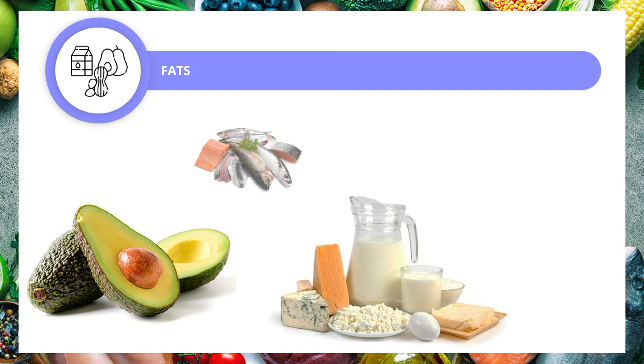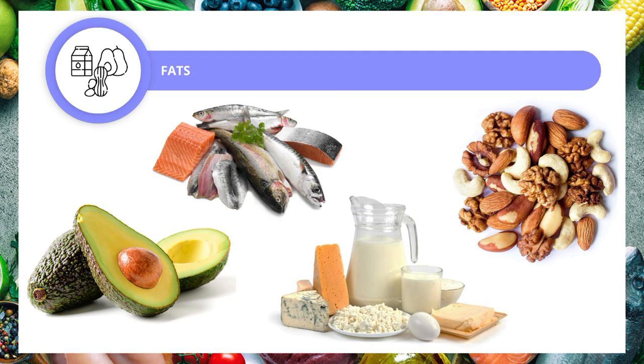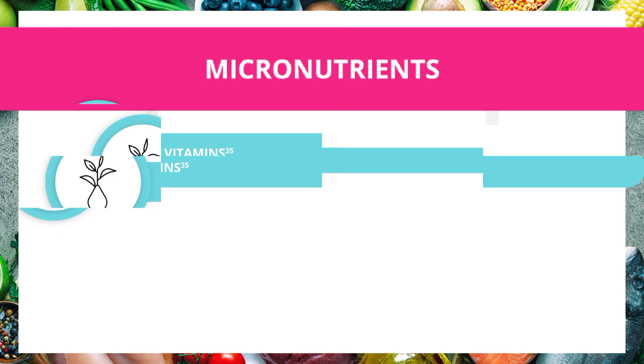We can get fats from avocados, dairy, fatty fish like salmon, mackerel, and sardines, nuts, extra virgin olive oil, eggs, and chia seeds. And now let us proceed to micronutrients.